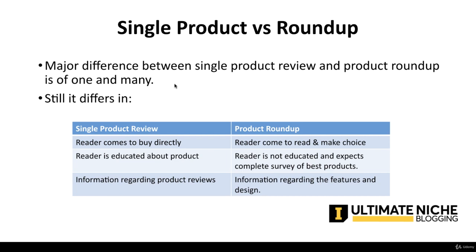There is a difference worth talking about. In a single product review, the buyer already knows what to buy — they are just looking for surety and features confirmation. It is just for the reader to confirm the product. So we manage the call to action with a 'Buy Now' button.